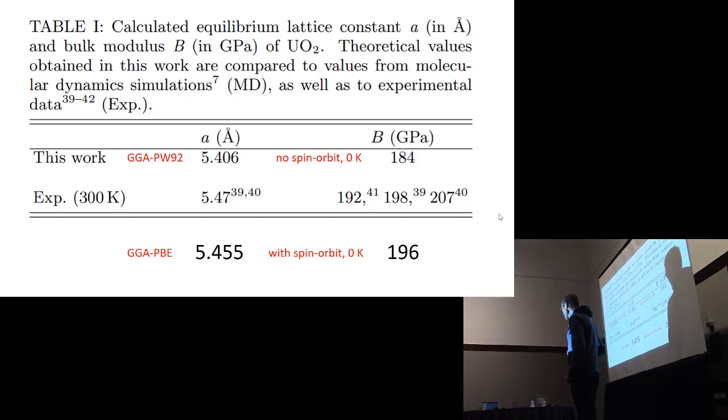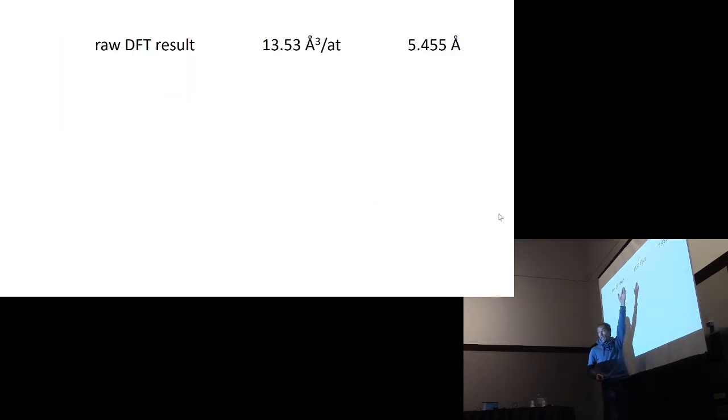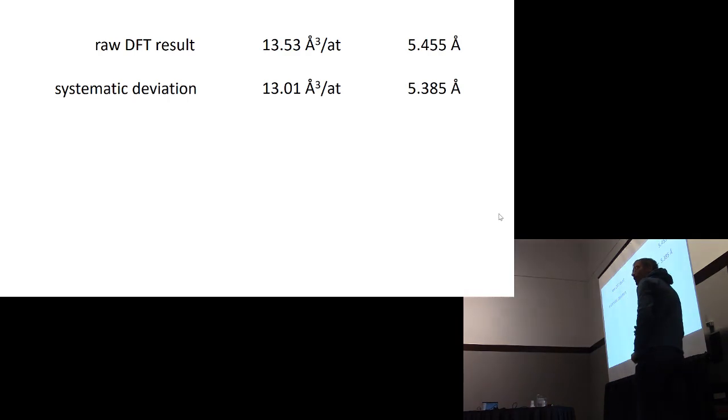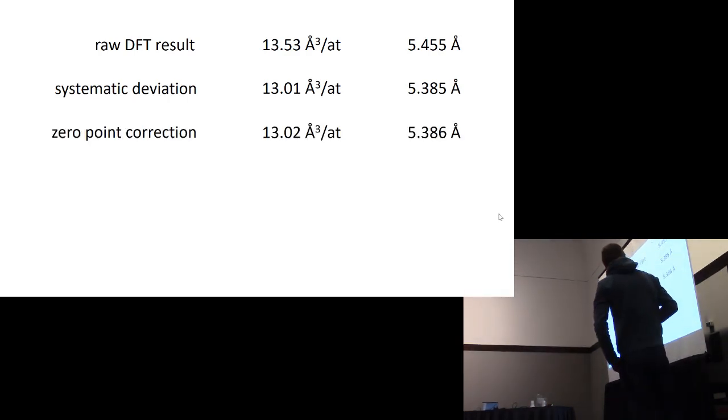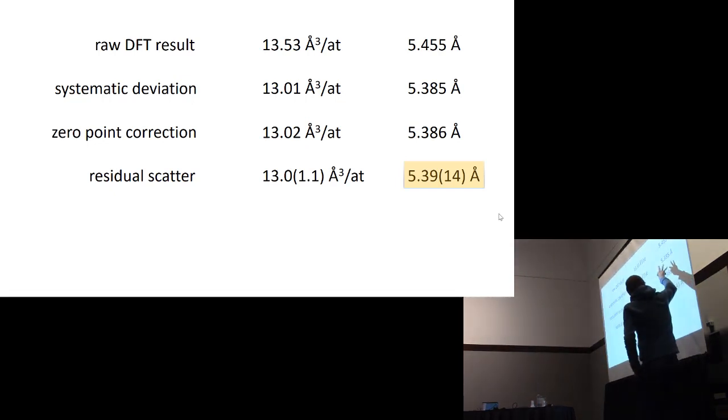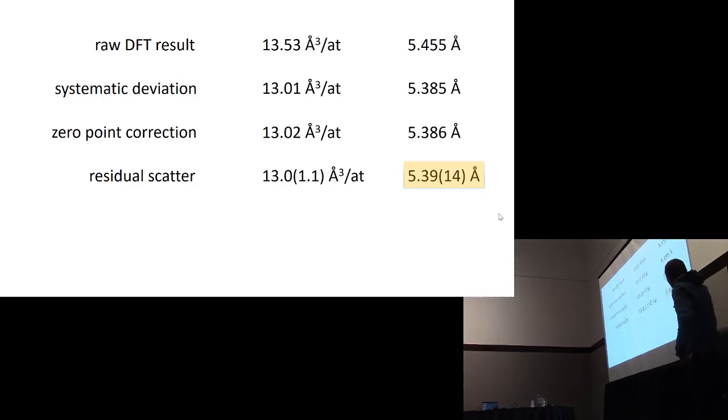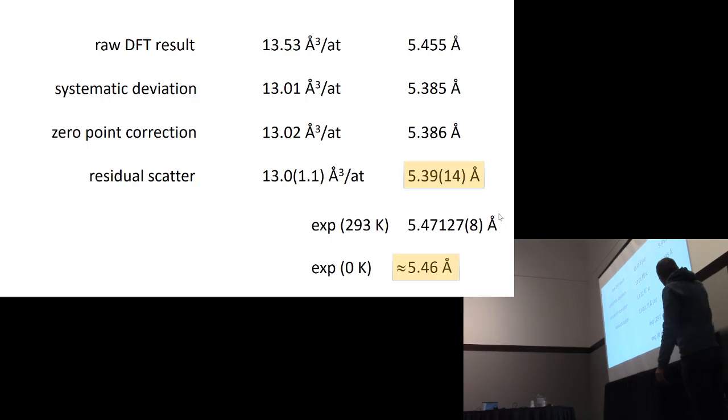I will now apply this to this uranium dioxide example. I made my own equilibrium lattice parameter prediction for uranium dioxide using PBE with spin-orbit coupling. I get this value, my bare PBE result. I apply this systematic deviation, the number becomes a bit lower. You can correct for zero point motion, but that's a very small effect here. And on that final number, you have to add this residual scatter. So the actual prediction from PBE is this quantity with an error bar. If you then compare this to the experimental value scaled down to zero Kelvin, that is the comparison you have to make. So now this is meaningful.